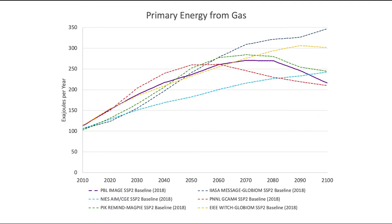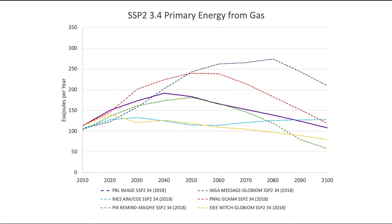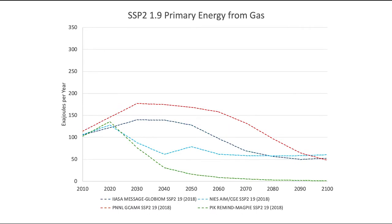Compare the baseline against 4.5 — less gas in all scenarios relative to what it would have been. If we go below 2.6 to a two-degree scenario, even less gas relative to baseline. And all the way down towards 1.5 degrees Celsius, even less. The key thing: more action, less gas.